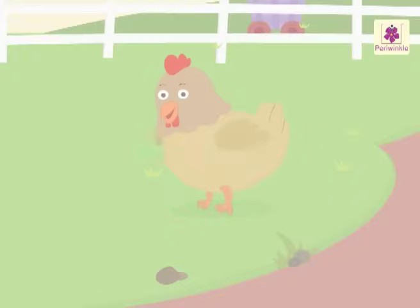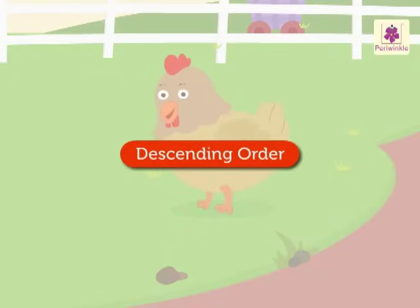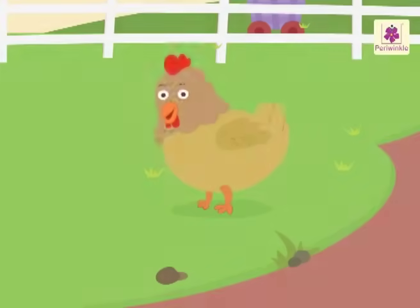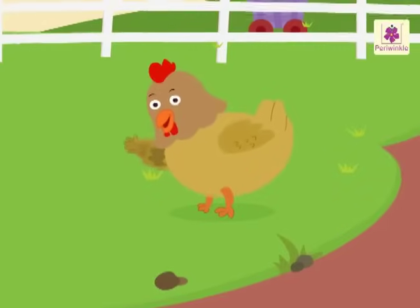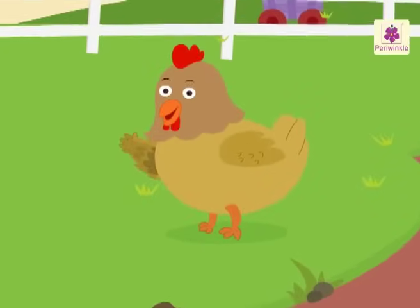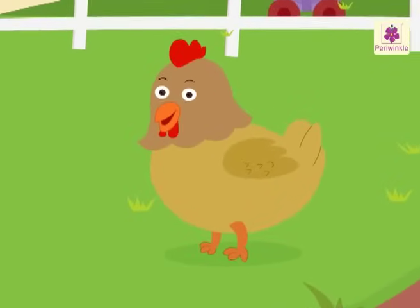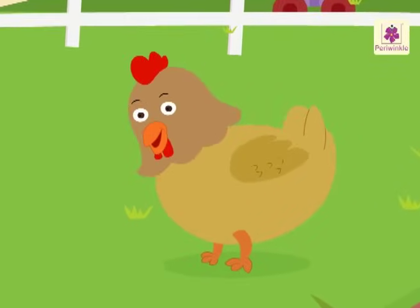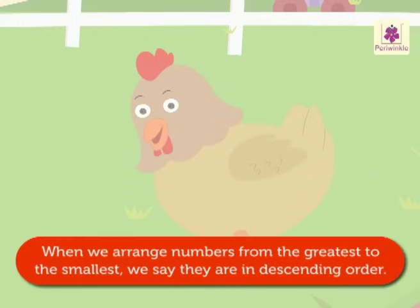Let's learn about the descending order with Daisy, the hen. What do you mean by descending order? When we arrange numbers from the greatest to the smallest, we say they are in descending order.